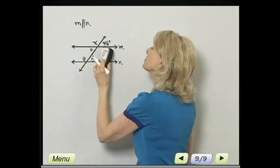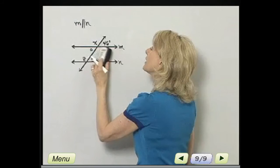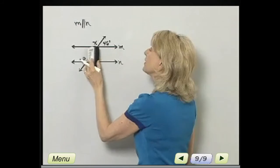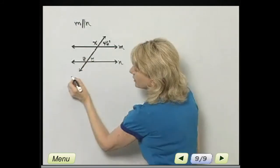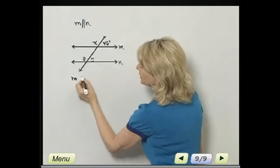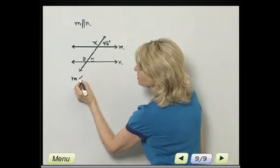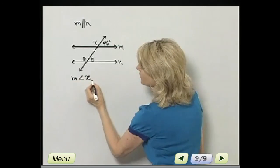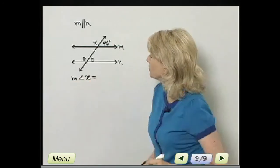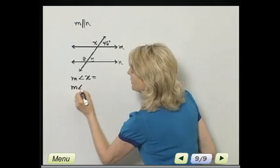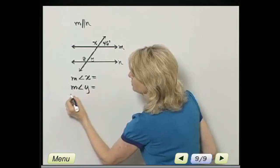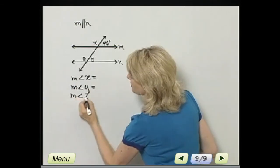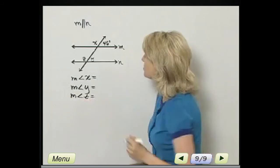But I'm interested in finding the measure of angle X, Y, and Z. I'm going to write a shortcut notation. The measure of angle X is equal to, and then the measure of angle Y is equal to, and the measure of angle Z. Let's find those measures.